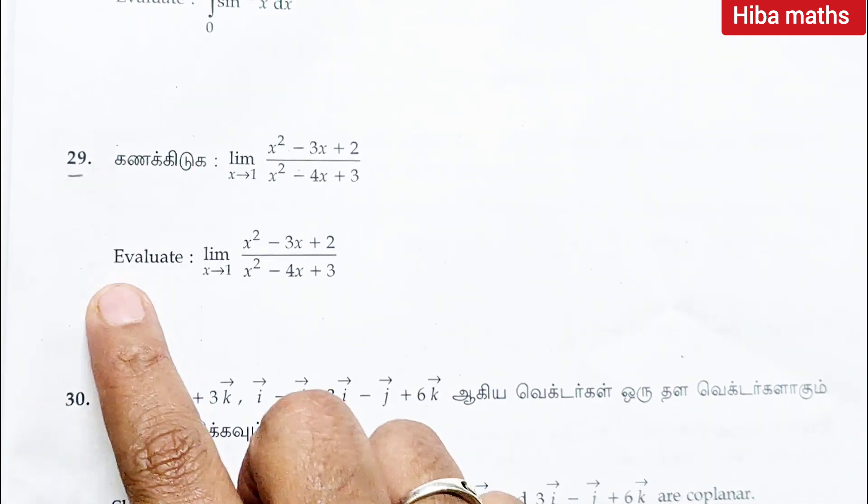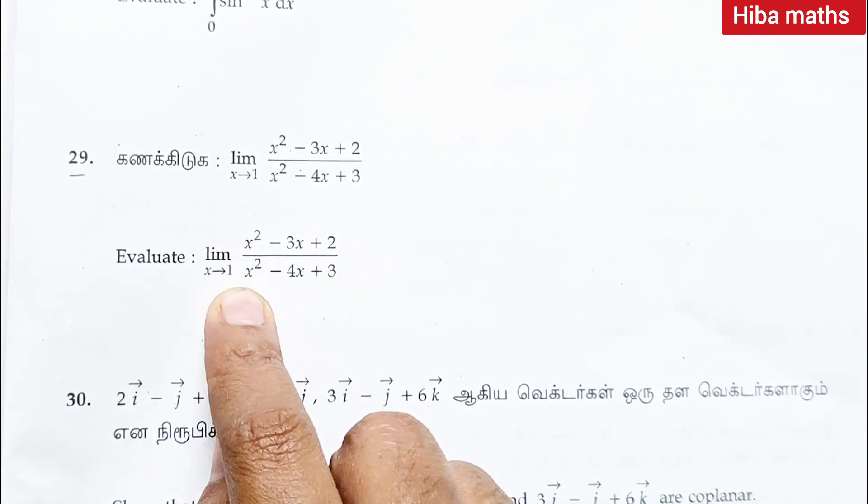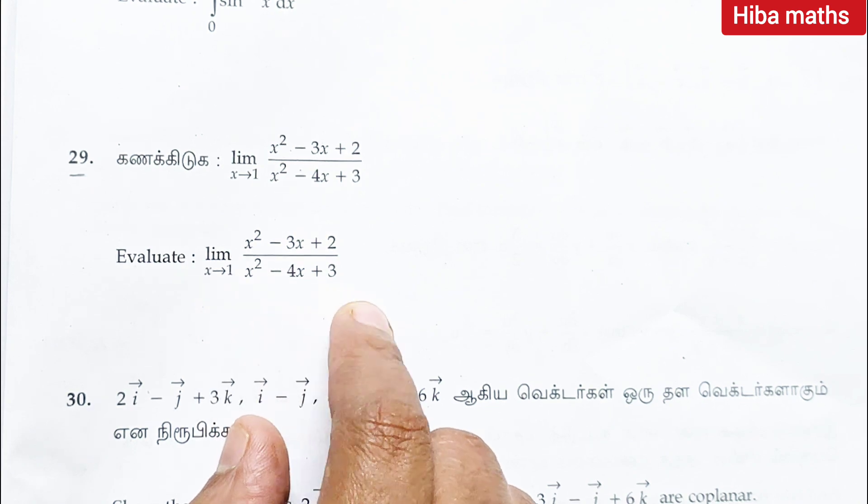Question 29: evaluate limit x turns to 1, x square minus 3x plus 2 divided by x square minus 4x plus 3.